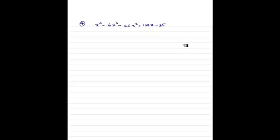Question number 4: if two zeros of the polynomial x to the 4 minus 6x cubed minus 26x squared plus 138x minus 35 are 2 plus or minus root 3, find the other zeros. We have seen that in this kind of problem, 2 plus root 3 is one root and 2 minus root 3 is another root. Therefore, (x minus (2 plus root 3)) times (x minus (2 minus root 3)) will divide the polynomial.